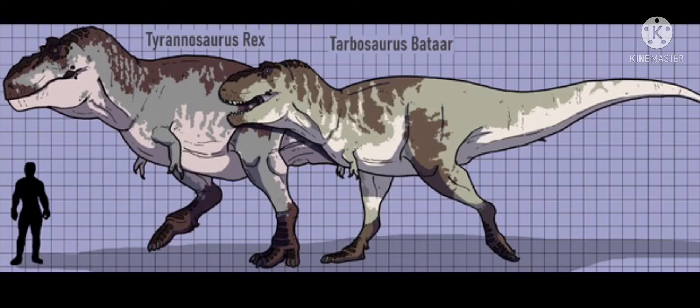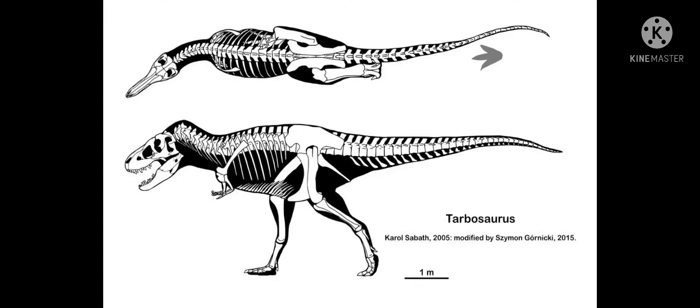Alright, let's start with Tarbosaurus. Tarbosaurus is smaller than T-Rex, as you can see here. It's probably the second largest Tyrannosaur. Now for the skeleton — the skeleton looks pretty similar to T-Rex, there's just two major differences aside from the size. Tarbosaurus's arms are actually smaller than T-Rex's.